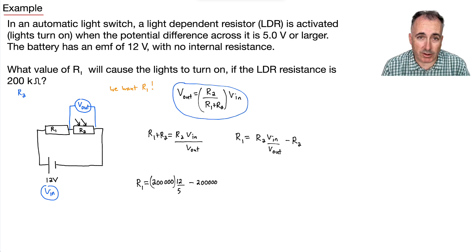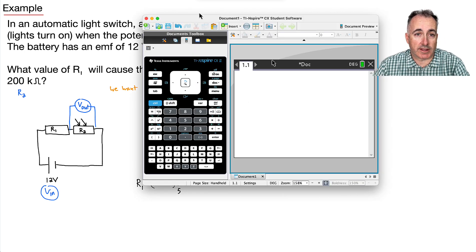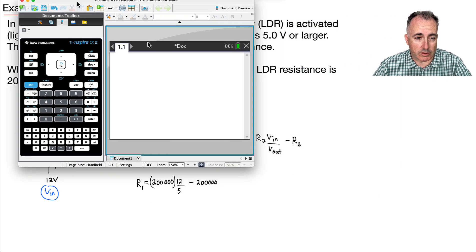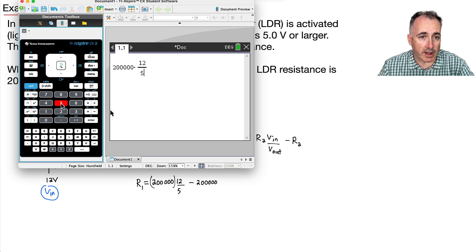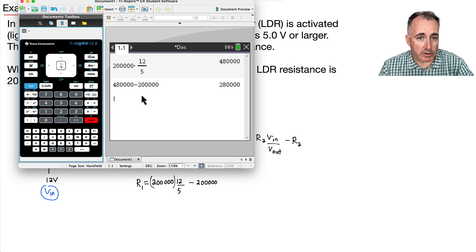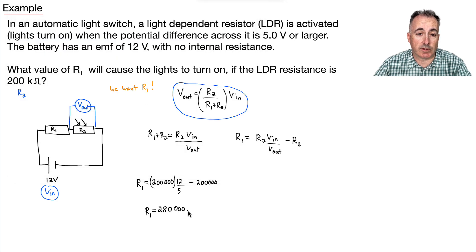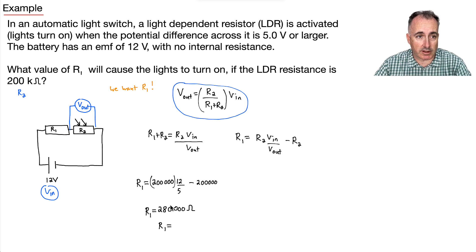Using a calculator: 200,000 times 12 over 5, then minus 200,000, gives 280,000 ohms. The answer is in ohms, and writing it the same way as given: that's 280 kilohms.